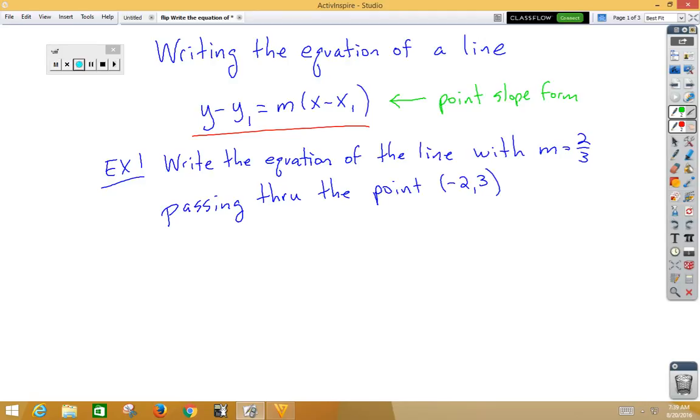In our first example, write the equation of a line with slope two-thirds passing through the point negative 2, comma 3.